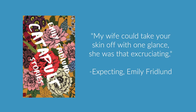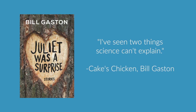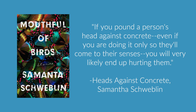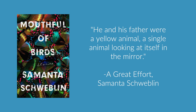For a couple examples — I went through some of the books on my shelf and pulled out a few. 'My wife could take your skin off with one glance. She was that excruciating.' That's from 'Expecting' by Emily Fridlund. 'I've seen two things science can't explain.' That's from 'Cake's Chicken' by Bill Gaston. From Miranda July's collection 'No One Belongs Here More Than You': 'In an ideal world we would have been orphans.' And 'If you pound a person's head against concrete, even if you're doing it only so they'll come to their senses, you will very likely end up hurting them.' That's from 'Heads Against Concrete' by Samana Schwoblin. Also from Schwoblin's book 'A Mouthful of Birds': 'He and his father were a yellow animal, a single animal looking at itself in the mirror.' That's from 'A Great Effort' — a great example of an interesting image.